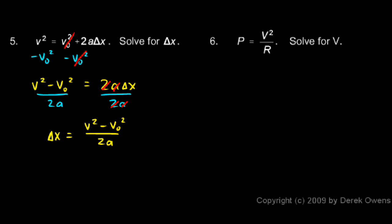In problem six, I have the formula p is v squared over r, and this is a formula from electricity. p here stands for power. The v stands for the voltage, and the r stands for the resistance. If you have an element in a circuit, it has a certain electrical resistance and a certain voltage going through it, and it has a certain amount of power. That's how much energy it's using in a given amount of time.